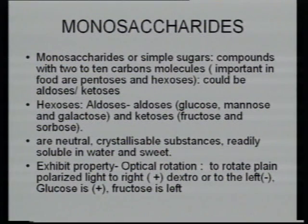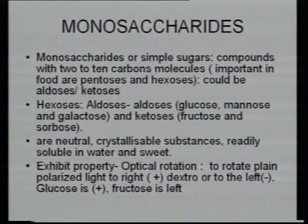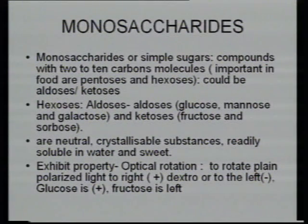There are polyhydroxy aldoses and ketoses. Aldose examples are glucose, mannose, and galactose, and ketose examples are fructose and sorbose. They are neutral, crystallizable substances, readily soluble in water and sweet. One other property they show is they are able to rotate the plane of polarized light — either to the right (dextrorotatory) or left (levorotatory). Glucose is dextrorotatory and fructose is levorotatory, represented by a minus sign.